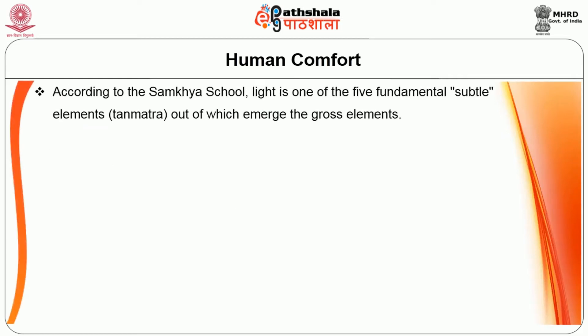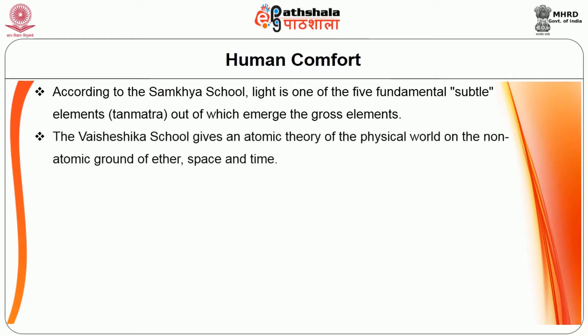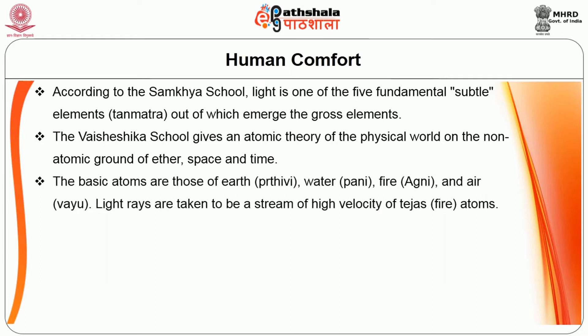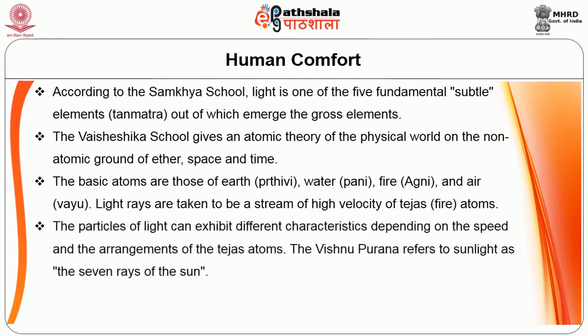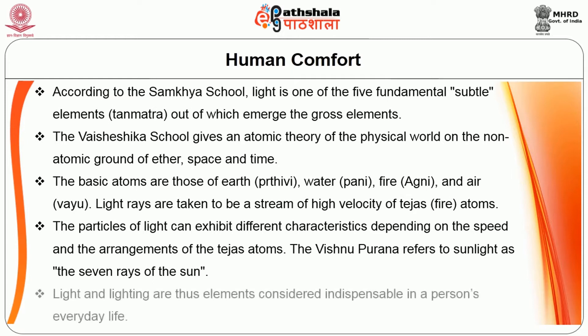According to the Samkhya school, light is one of the five fundamental subtle elements — thanmatra — out of which emerge the gross elements. The Vaisheshika school gives an atomic theory of the physical world on the non-atomic ground of ether, space and time. The basic atoms are those of earth (prithvi), water (pani), fire (agni) and air (vayu). Light rays are taken to be a stream of high-velocity Tejas atoms — fire atoms — and particles of light can exhibit different characteristics depending on the speed and arrangement of those atoms. The Vishnu Purana refers to sunlight as the seven rays of the sun. Light and lighting are thus considered indispensable in a person's everyday life.